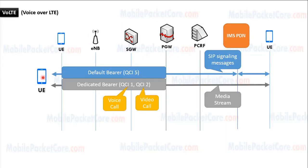In summary, in order to be able to initiate a voice or a video call while connected to LTE network, the UE first creates a default EPS bearer with QCI5 that will be used to pass signaling messages between the UE and the IMS network. Then the network will create a dedicated EPS bearer with QCI1 in case of voice call, or QCI2 in case of video call, to pass the media streams of the call between the originating UE and the receiving UE.